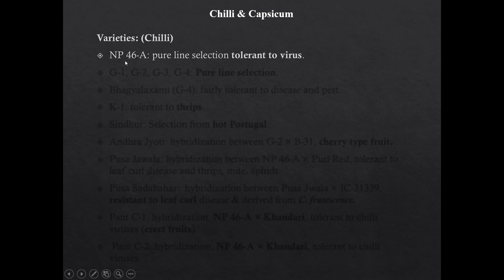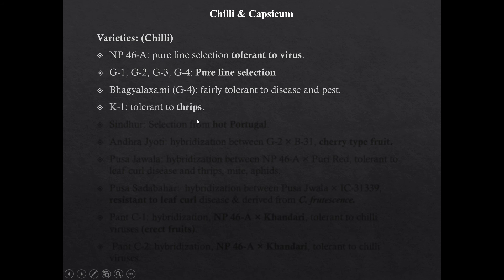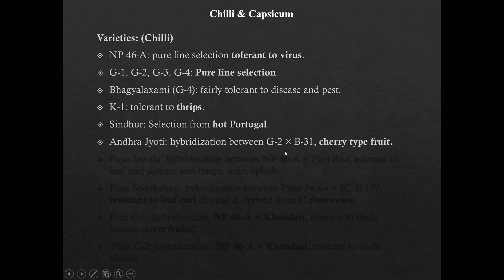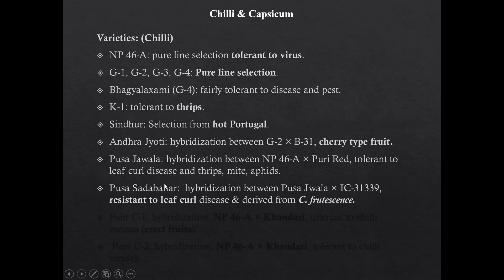Varieties of chili: NP46A is a pure line selection tolerant to virus. G1, G2, G3 and G4 are developed by pure line selection. Baggi Lakshmi G4 is fairly tolerant to disease and pests. K1 is tolerant to thrips. Pusa Sadabahar is developed through hybridization between Pusa Jola and IC31339; it is resistant to leaf curl disease. Another variety is developed through hybridization between Pusa Capsicum and Capsicum frutescens.